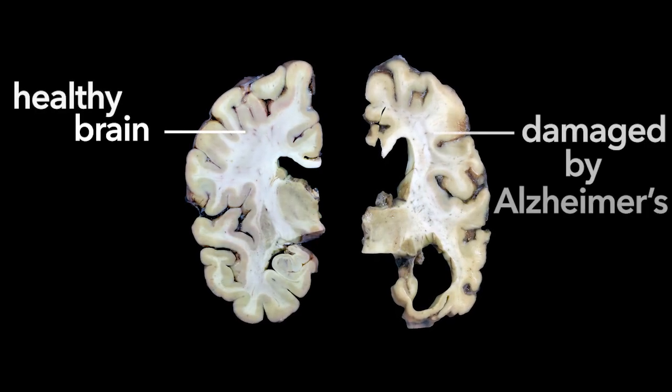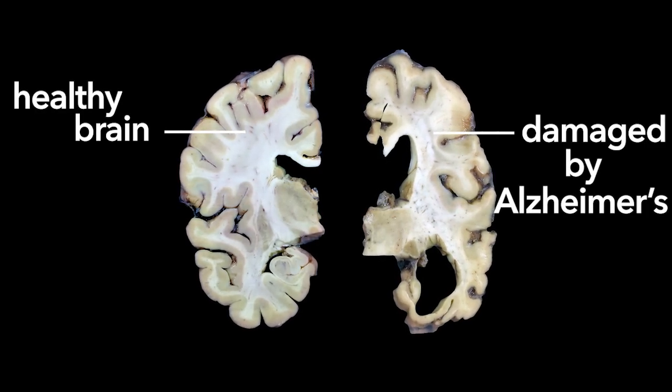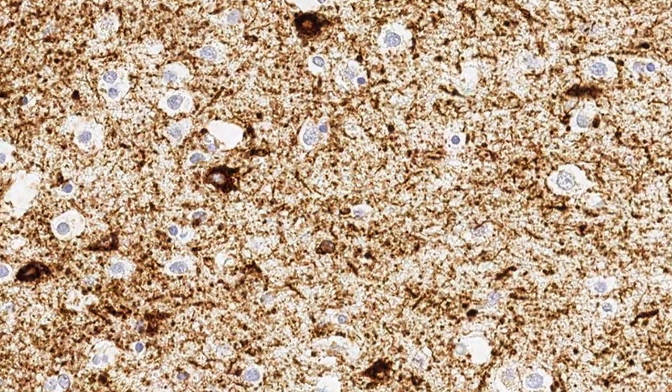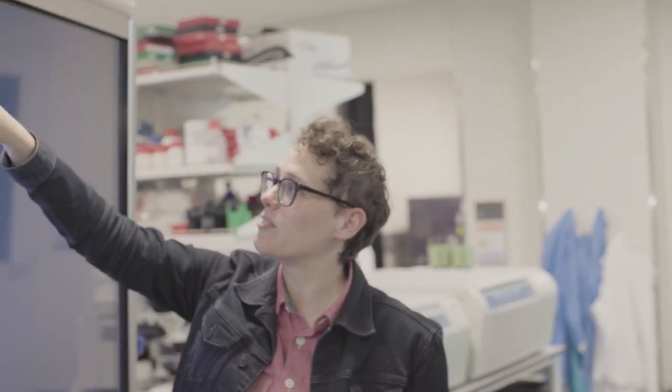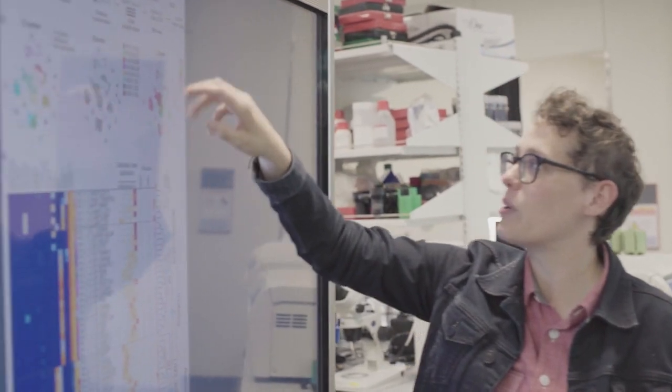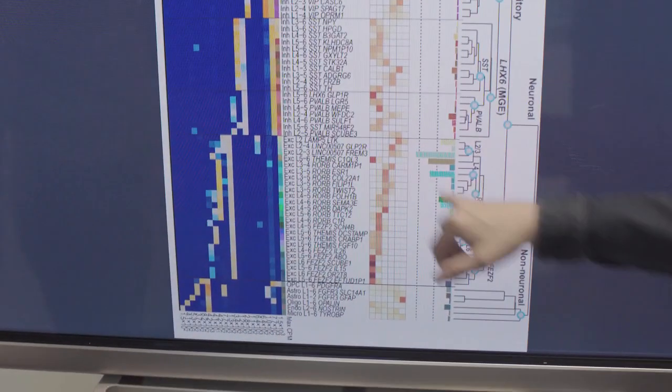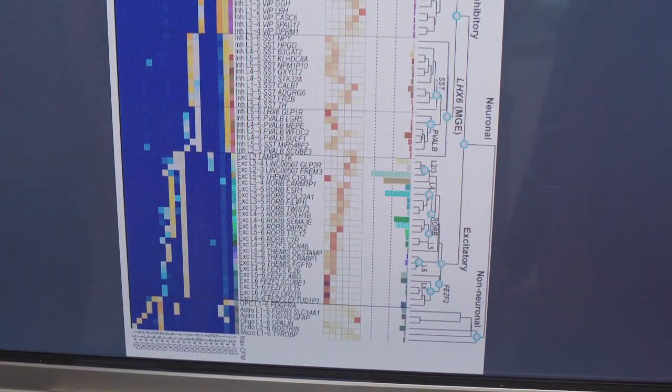Our current understanding of what Alzheimer's disease does to the brain is that there's accumulation of toxic molecules that ultimately cause the cells to become sick, and the result of this is dementia. What really is needed and what is lacking is an understanding of the earliest changes in disease before these toxins start to accumulate.